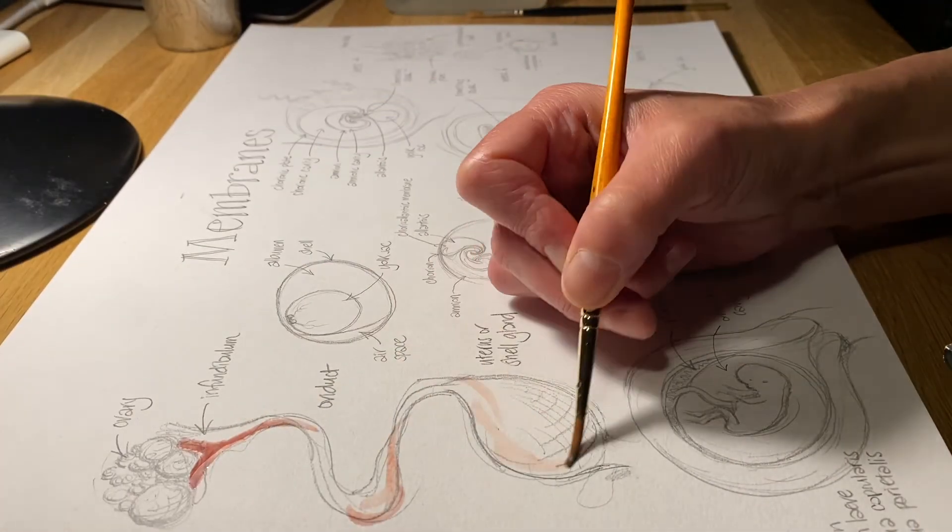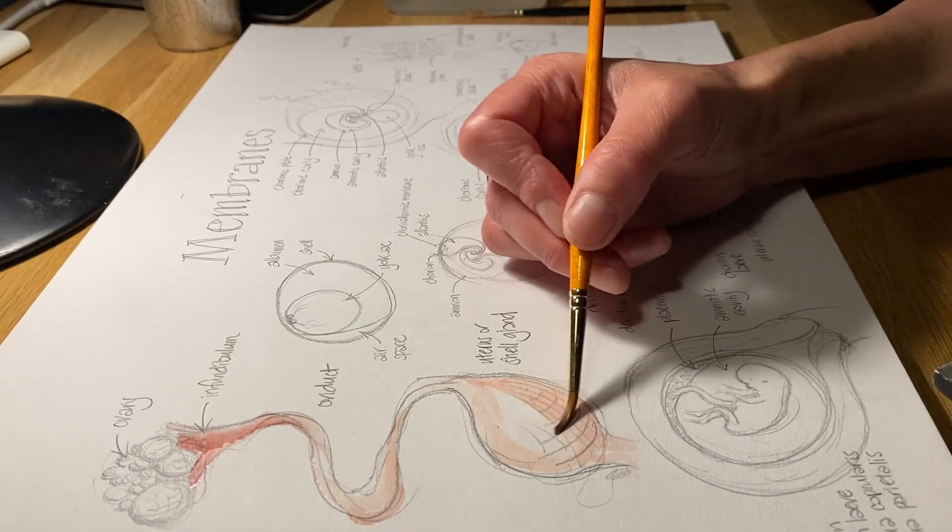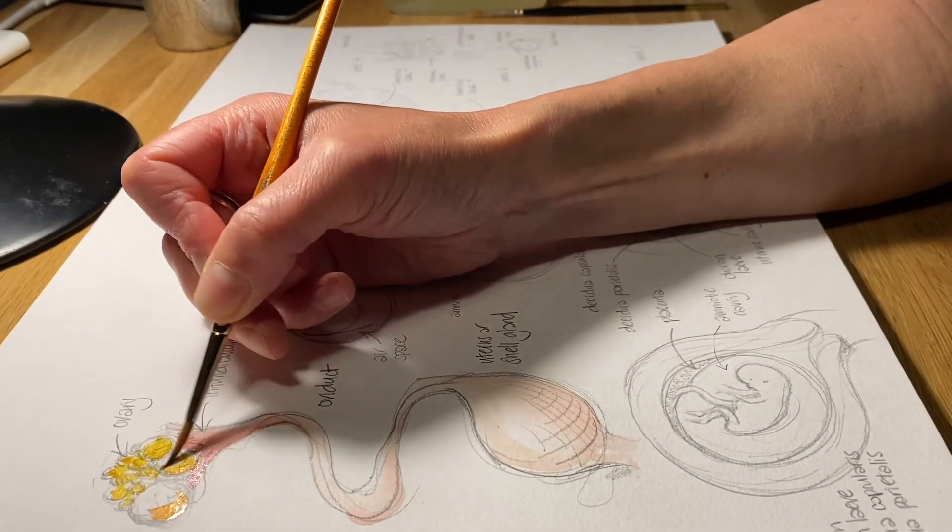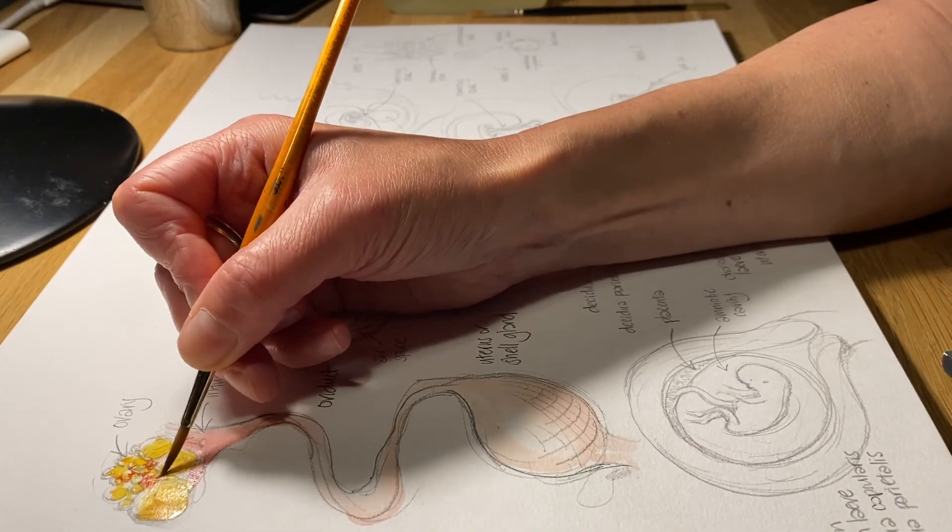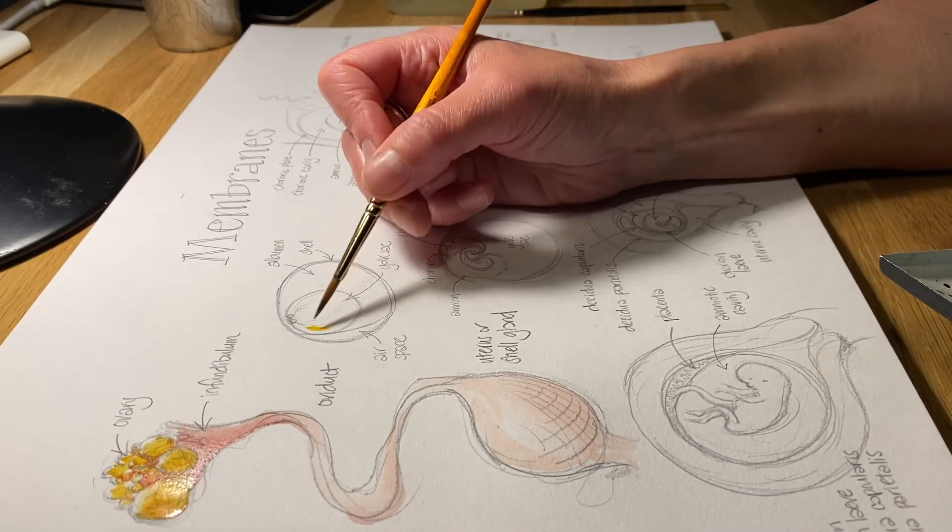Now it's time to add some color and perhaps pick out some more details as we do. There's the hen's reproductive tract that we started with and that ovary, which I'm coloring in with bright yellow because those ovaries really are that color, as you know from looking at hen's eggs. You can see that they're all different sizes and the bigger ones are just getting ready to ovulate out.